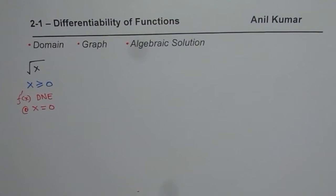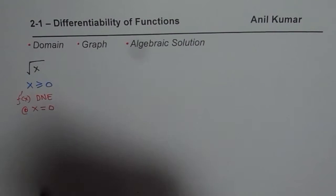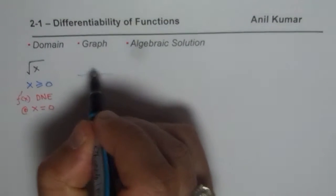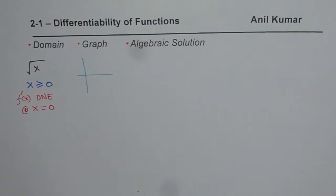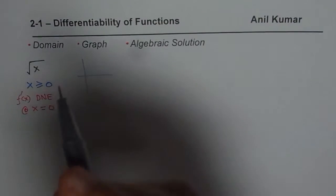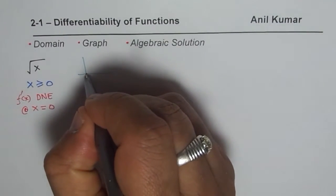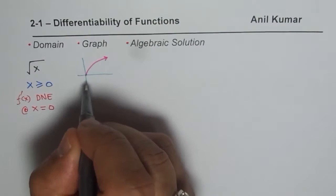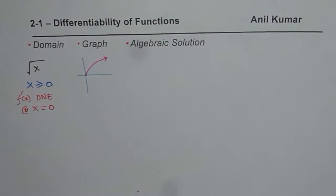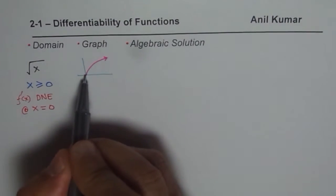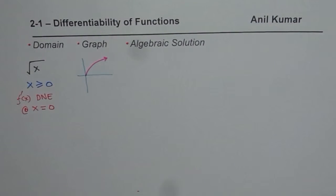So that is the corner at which it is not existing. If I graph this function, square root x looks kind of like this. You see this corner — the starting point. The limit does not exist from the left side, and that is one reason why it is not differentiable.